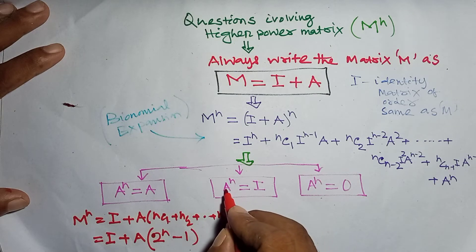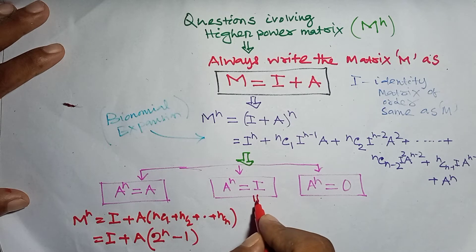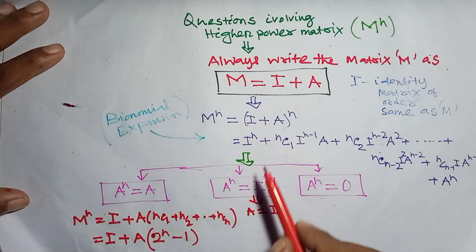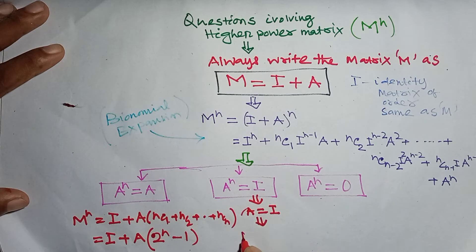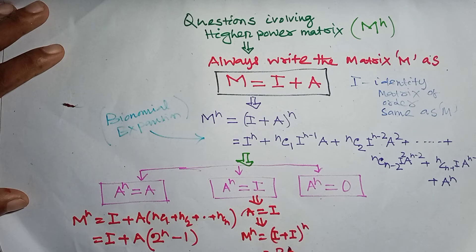Case 2: A^n equals the identity matrix. This simply means A is itself an identity matrix. So M^n = (I + I)^n = (2I)^n = 2^n · I.